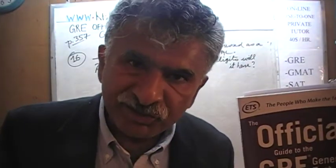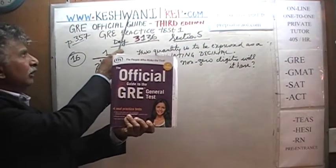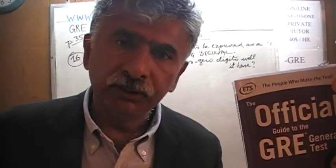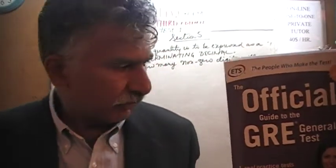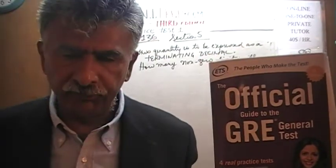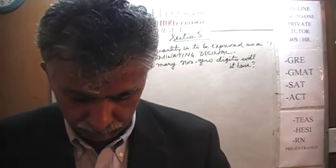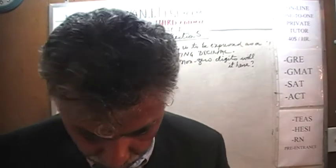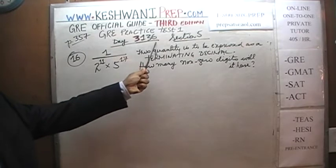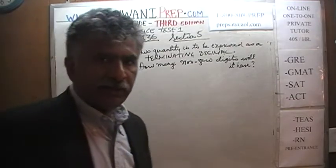Hello, my name is Keshwani — that's K-E-S-H-W-A-N-I. We are here because we want to prepare for the GRE. We have been solving math problems out of this book, the Official Guide to the GRE, the third edition. If you do not own this book already, purchase it immediately — you're going to need it. Today is our lesson number 136, Day 3136. The three is to signify the third edition, day 136.